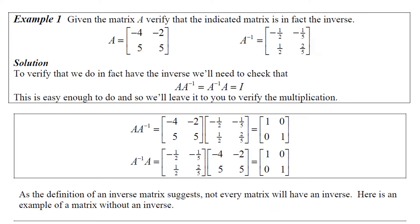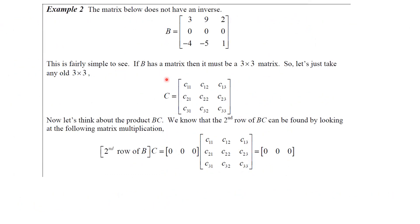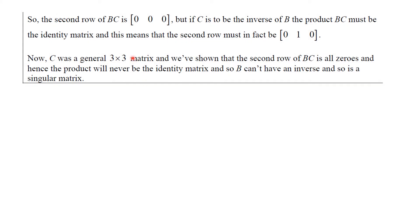Here's an example of a matrix that does not have an inverse. The easiest way to see it is to take the second row of B and multiply it by a general matrix C. Because the second row of B consists of all zeros, the second row of the product BC will always be zero regardless of C. But for C to be an inverse of B, the product must yield the identity, which requires a one in that position. Since it can never have a one there, B is not invertible and is therefore a singular matrix.